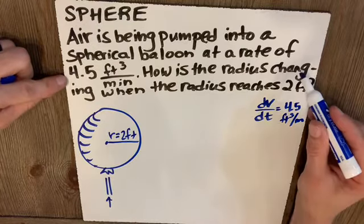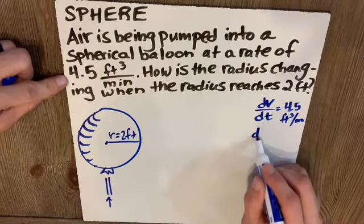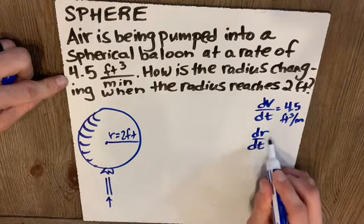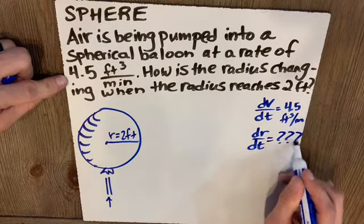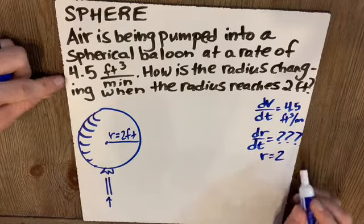They want to know how the radius is changing. So dr/dt equals what? We don't know when r equals two feet.